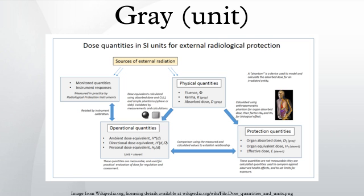The adoption of the gray by the 15th General Conference on Weights and Measures as the unit of measure of the absorption of ionizing radiation, specific energy absorption, and kerma in 1975 was the culmination of over half a century of work, both in the understanding of the nature of ionizing radiation and in the refinement of measuring techniques.